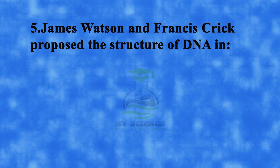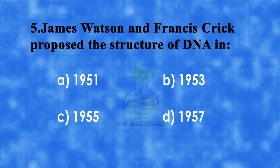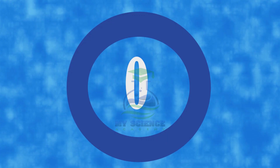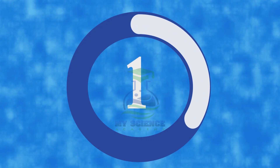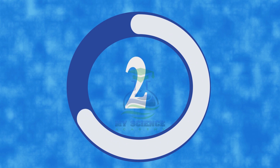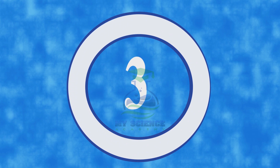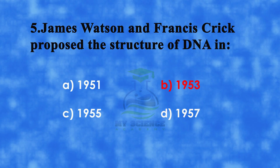Question 5: James Watson and Francis Crick proposed the structure of DNA in — A. 1951, B. 1953, C. 1955, or D. 1957. Correct answer is B. 1953.